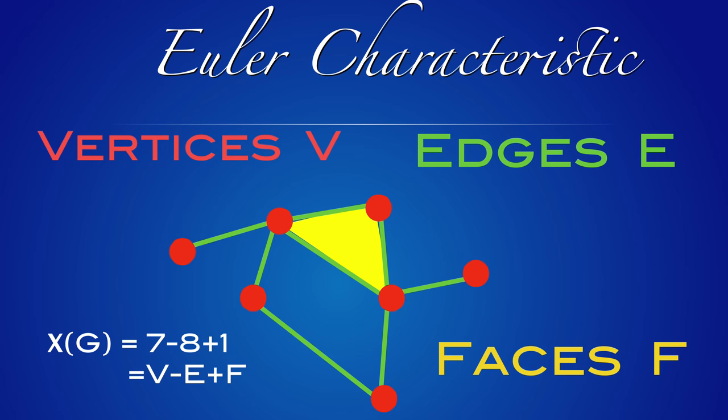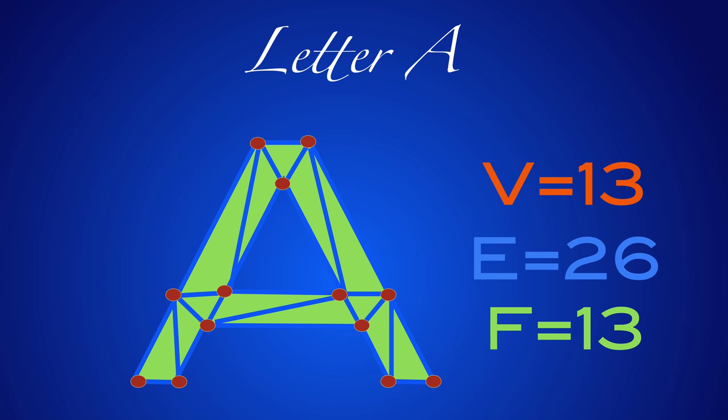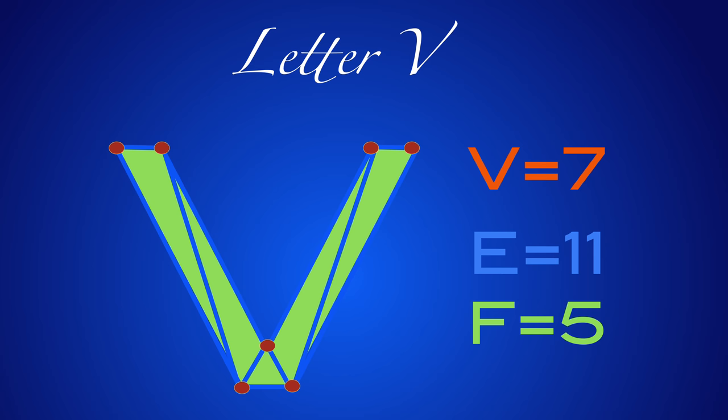We can now go back to the letters we looked at earlier. Let's look at the letter A — we can triangulate it. In this case we have 13 vertices, 26 edges, and 13 faces. If we add V minus E plus F, we get zero. Here is a computation in the case where the letter is simply connected — in all these cases the Euler characteristic is one.